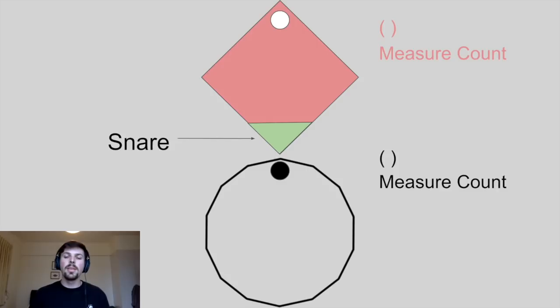And since it's polymeter, they'll rotate at the same speed. The green triangle just denotes where most of the snare hits are. There are a couple exceptions, but it mostly describes what the drums are doing here. Anyway, check this out.